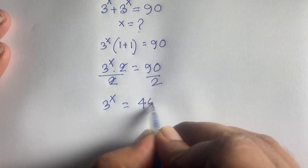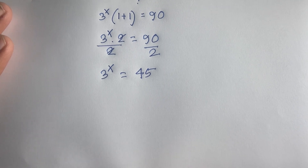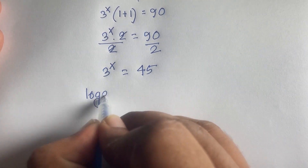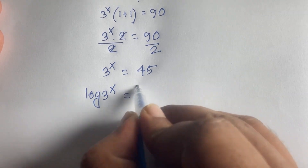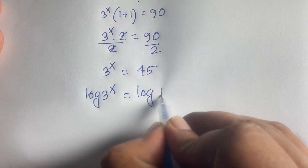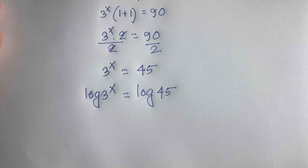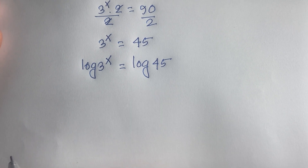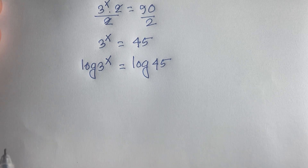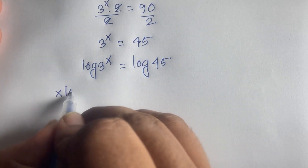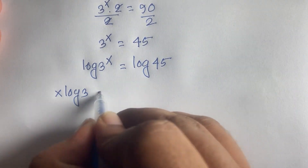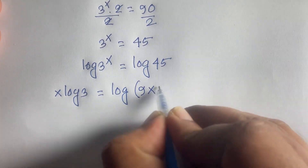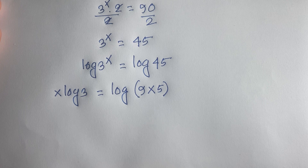Then I apply natural log to both sides, so log 3 to the power x is equal to log 45. Now according to logarithm rules, I can see easily this x moves to the front, so it will be x log 3 is equal to log 45, which is log of 9 times 5.